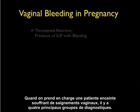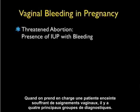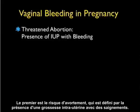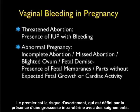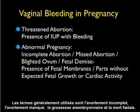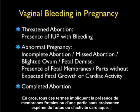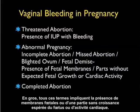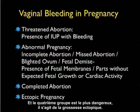When taking care of a patient who has vaginal bleeding in pregnancy, there are four main classifications of diagnoses. The first is a threatened abortion — the presence of an intrauterine pregnancy with bleeding. The second encompasses incomplete abortion, missed abortion, blighted ovum, and fetal demise — all meaning the presence of fetal membranes or parts without expected fetal growth or cardiac activity. The third is a completed abortion where there's no further presence of fetal membranes and the cervical os is usually closed. The fourth and most dangerous is ectopic pregnancy.